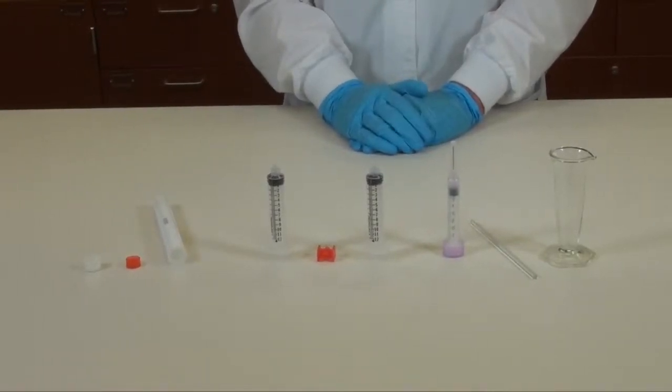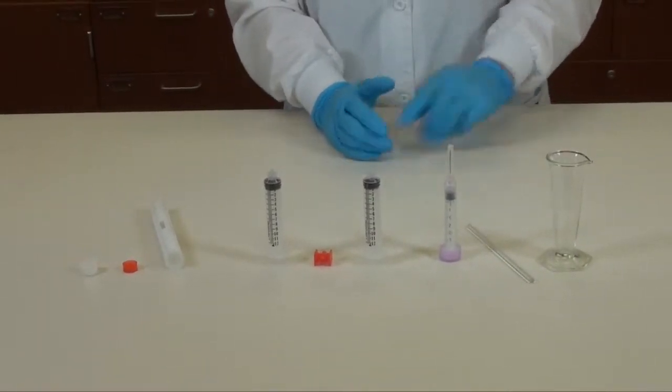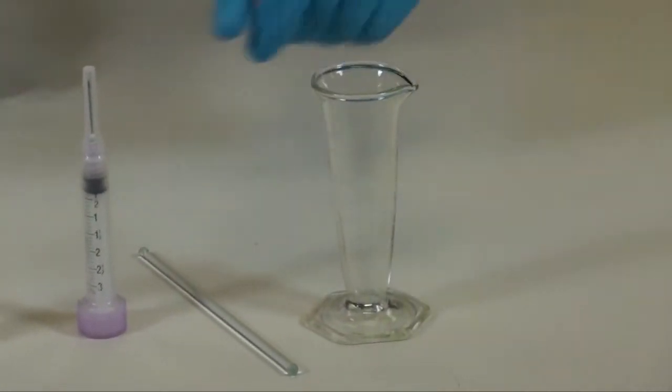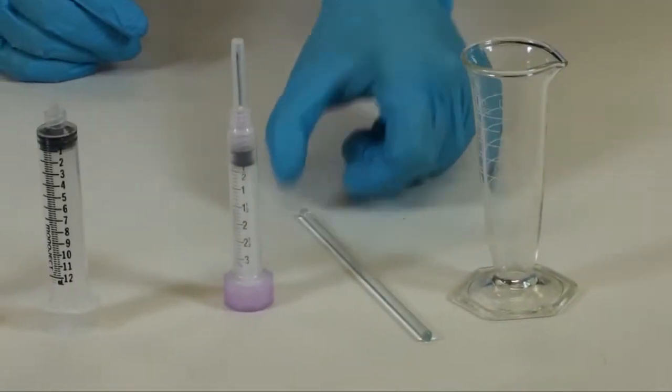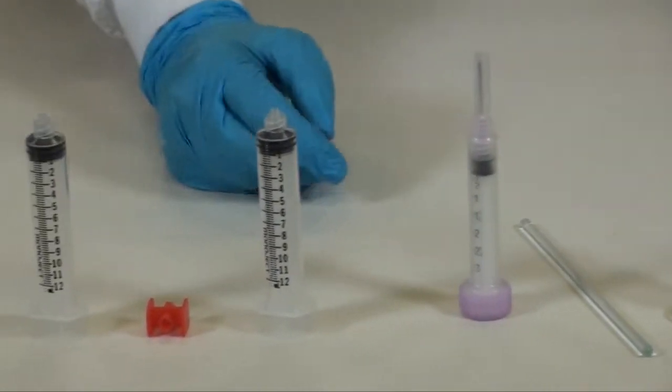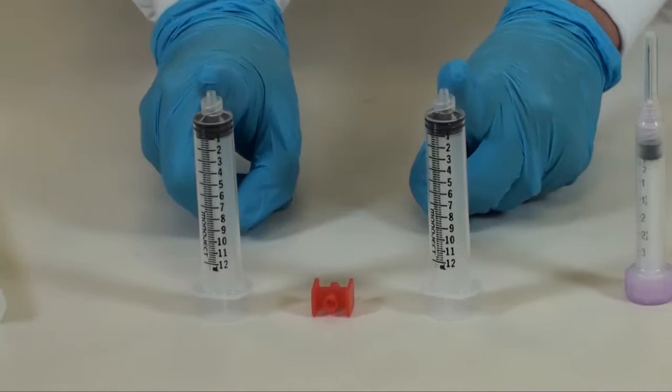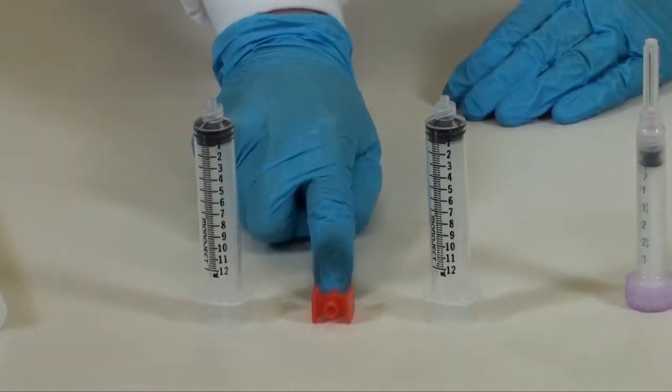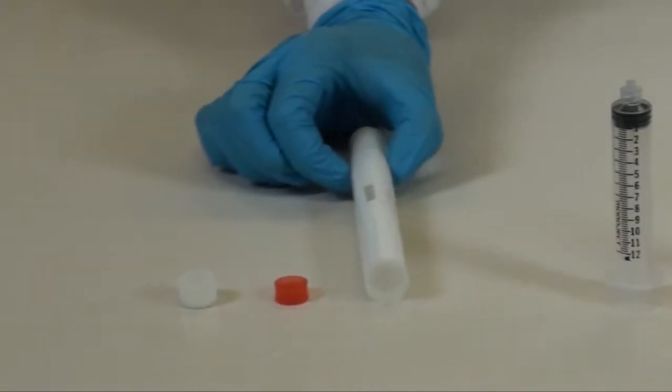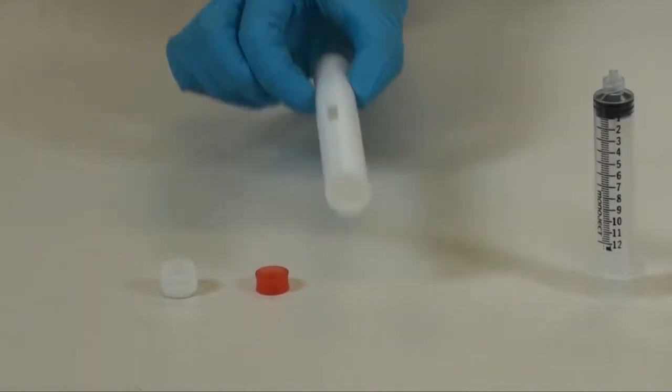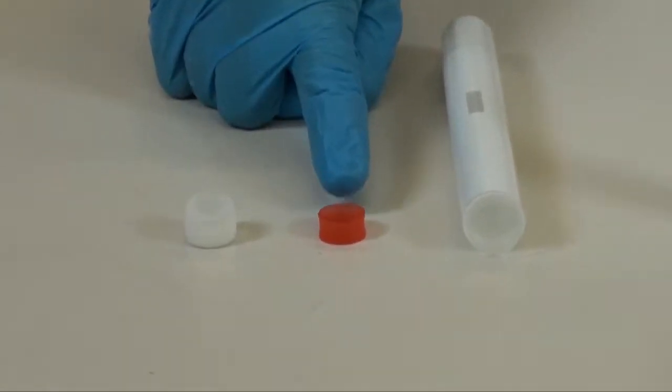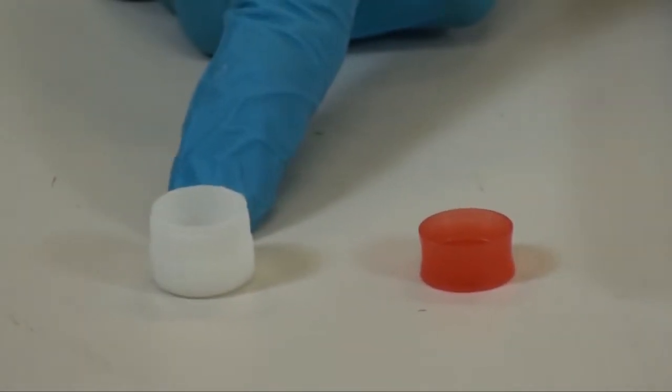The supplies required for the PLO gel this week will be a one ounce graduated conical, a glass stirring rod, a 3ml syringe with a needle, two 12ml syringes with this red syringe connector, and an AccuPen that comes in three pieces: the tube that you load the final product, the red cap, and then the end cap.